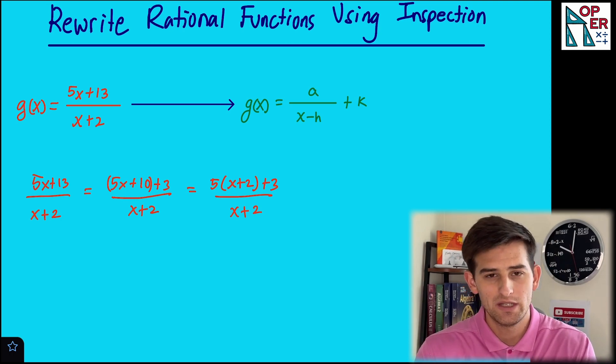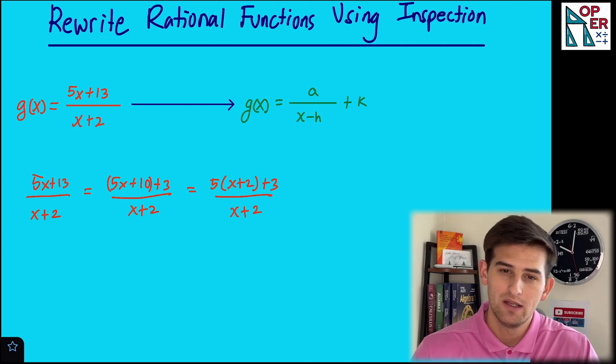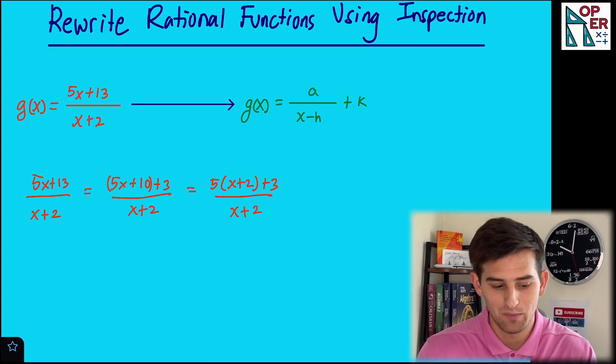So now what we could do is, essentially we have a rational expression that is over one denominator. So we could undo basically combining two fractions that had the same denominator, and we could spread apart or split apart this fraction into two fractions.